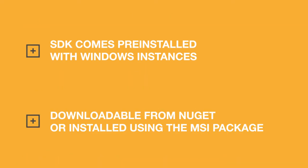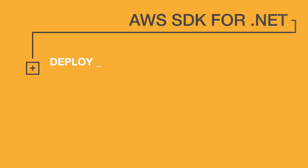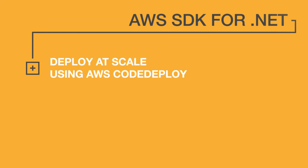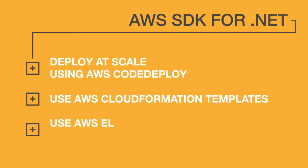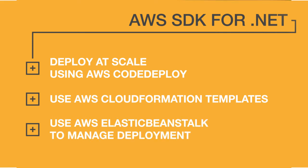With AWS, developers can deploy at scale using AWS CodeDeploy with Auto Scaling, and deploy applications using CloudFormation templates that help you easily deploy and manage solutions. You can also simply upload your code and Elastic Beanstalk automatically handles the deployment, from capacity provisioning, load balancing, and auto scaling, to application health monitoring.